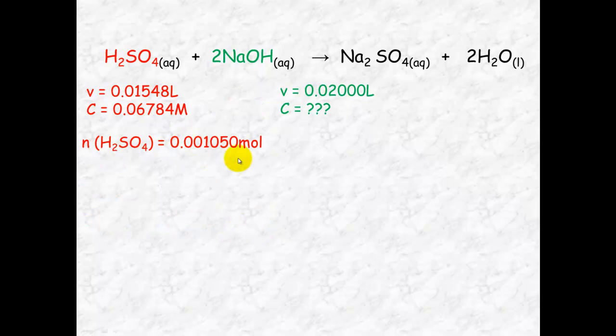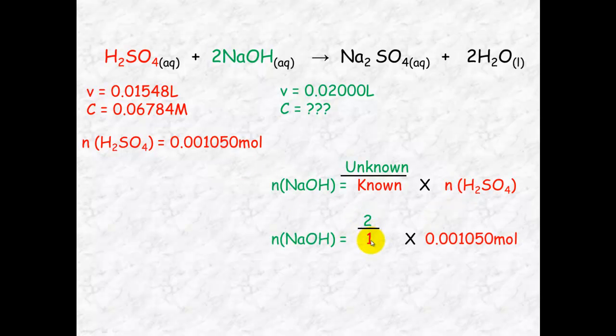We can now use this and the mole relationship here, or the mole ratio, between the sulfuric acid. So one mole of sulfuric acid reacts with two moles of sodium hydroxide. We use this to work out the number of mole of sodium hydroxide. It's unknown over known times the amount that we've just figured out here. So we've got a two to one ratio. The unknown here is two and the known is one. So two over one times this equals 0.002100 mole.